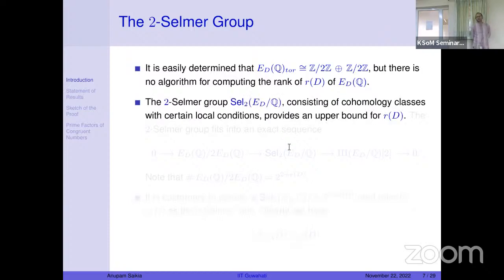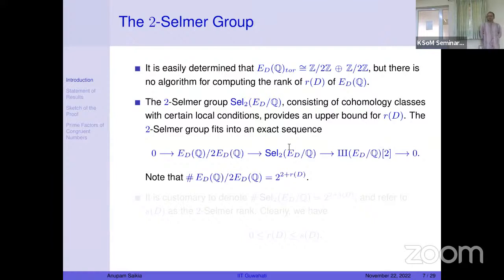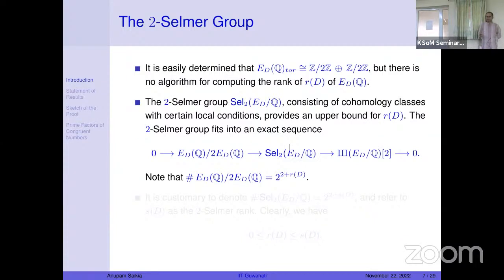Because of the difficulty of calculating the Mordell-Weil rank, we look at Selmer groups. In our case we consider the 2-Selmer group, which consists of cohomology classes in the first cohomology group satisfying local conditions. What we get is an exact sequence: the Mordell-Weil group modulo 2 injects into the 2-Selmer group, and we have the 2-torsion part of the Shafarevich-Tate group on the other end. This shows the significance of the Selmer group — it controls both the Mordell-Weil group and the Shafarevich-Tate group.